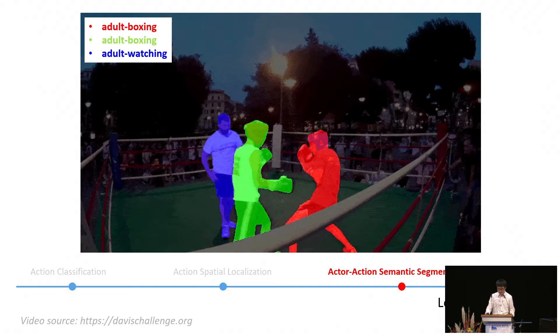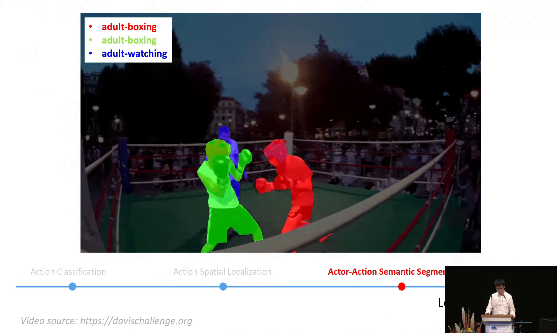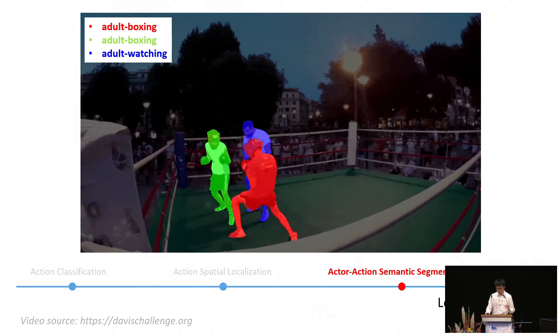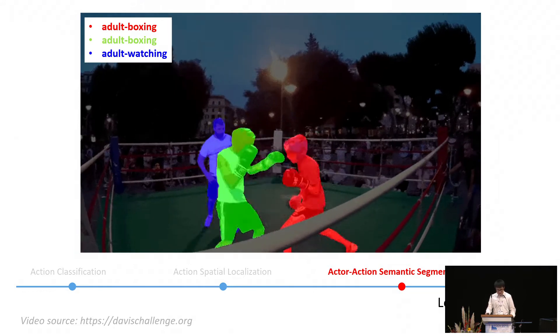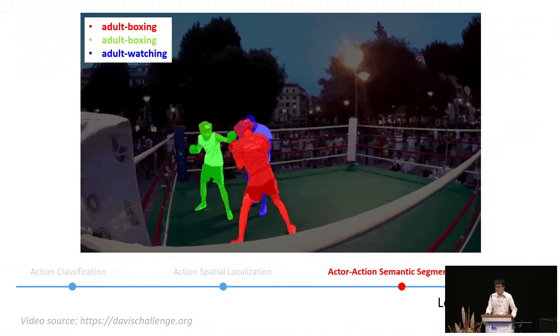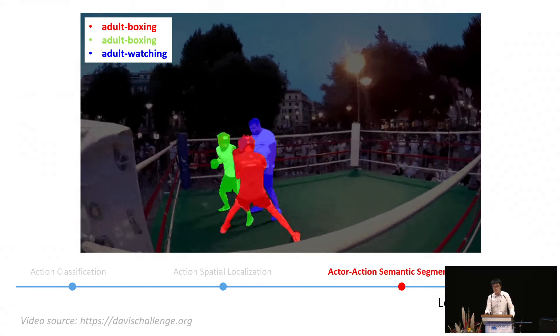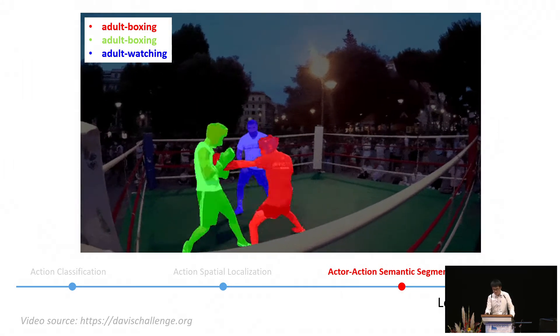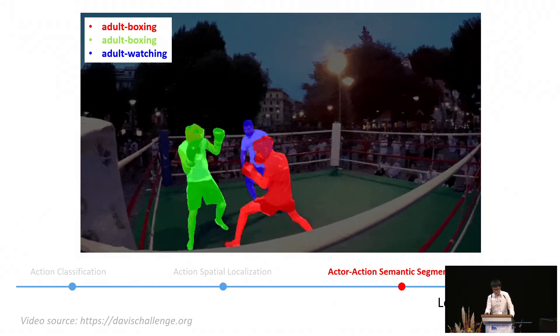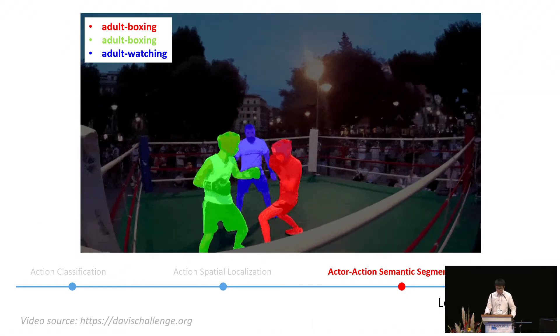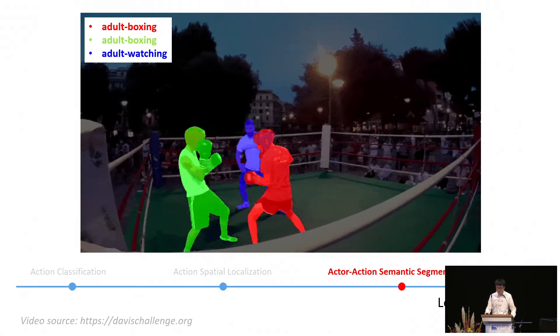However, for some applications, understanding at the bounding box level is still too coarse. For instance, if we want to build automated scoring in boxing, we may require analysis of where punches are making contact on the other boxer. This means we would need instance level semantic segmentation of the actors and their actions in scene. This type of application motivates us to work on the task of actor action semantic segmentation.